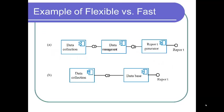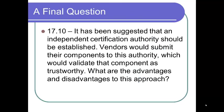Looking at the architecture, sometimes you can see that an architecture is going to be flexible, as in diagram A, while B is faster because it has fewer components and less communication overhead. Some decisions required: what composition of components effectively delivers functional requirements, what composition allows for future change, and what will the emergent properties of the system be? A final question from Somerville: it has been suggested that an independent certification authority be established where vendors submit their components for validation of trustworthiness. What are the advantages and disadvantages?